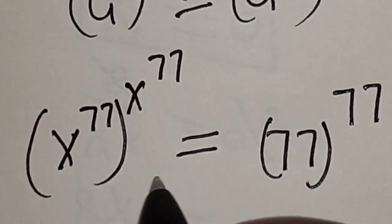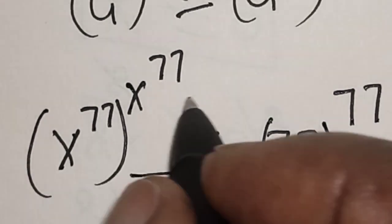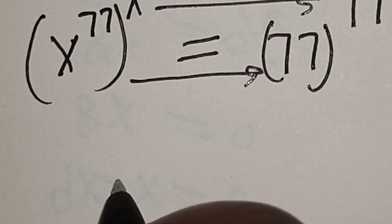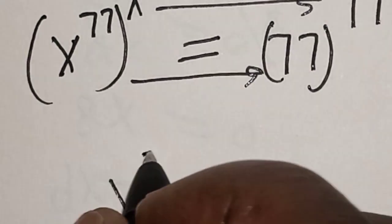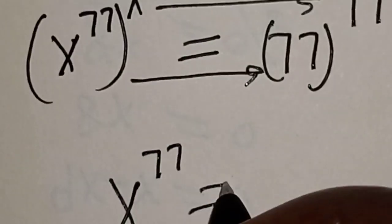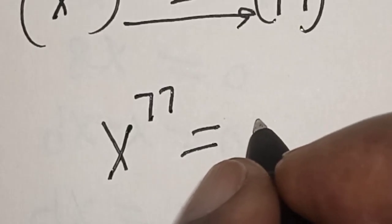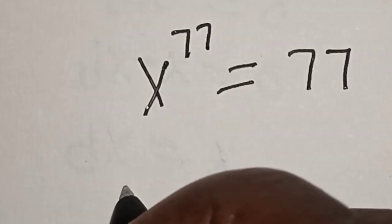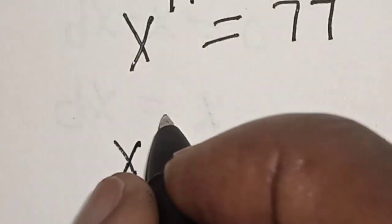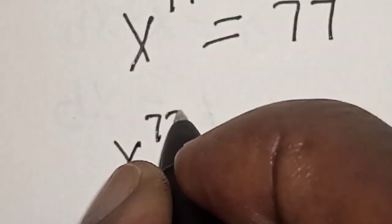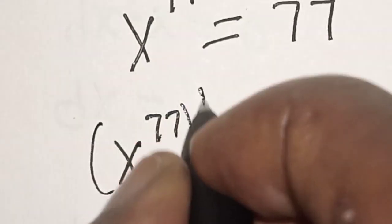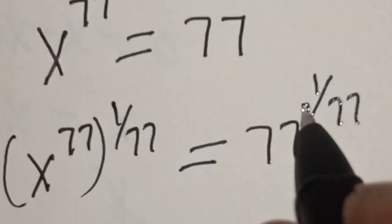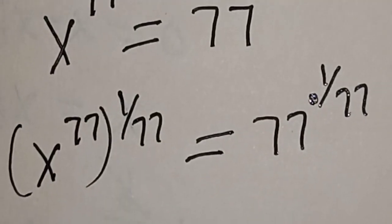By comparing both sides — this equals this and this equals this — therefore x raised to power x raised to power 77 multiplied by 1 over 77 is equal to 77 raised to power 1 over 77.